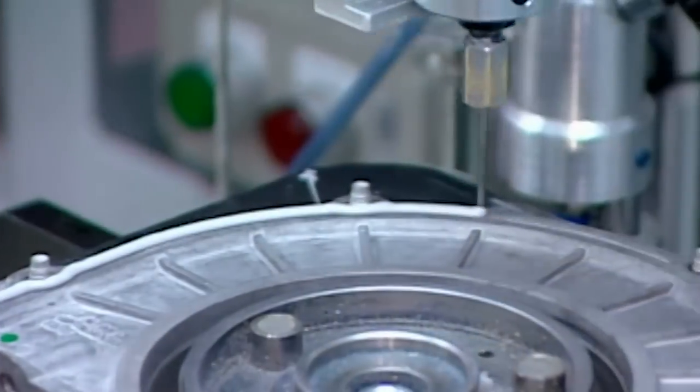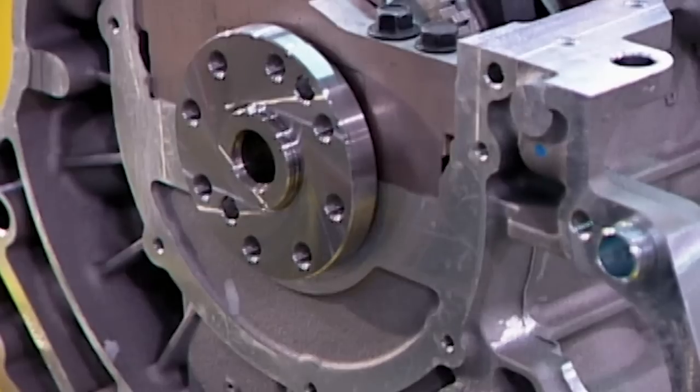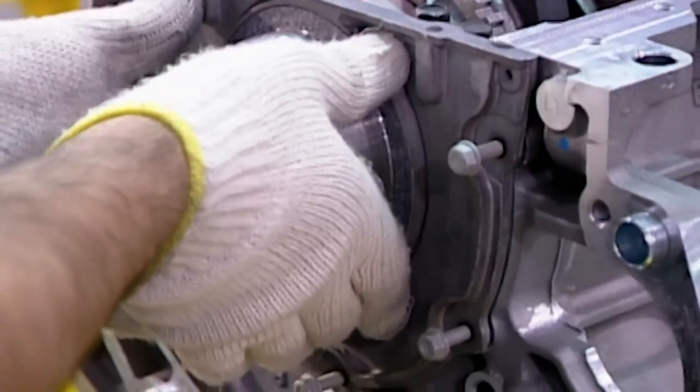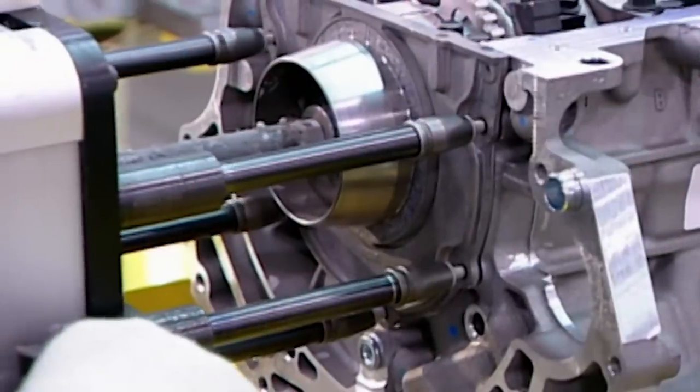Now workers can close up the back of the engine block. A robot applies sealant to the rear cover. Workers bolt it on manually with a tool called a multi-spindle torque gun.